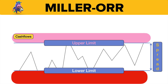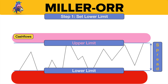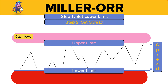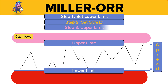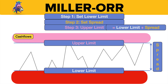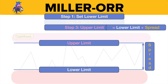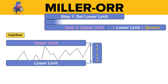So that is the spread. First of all, you manually set the lower limit — that's up to the directors. Then step two is to actually calculate the spread. And then step three, you've already calculated the upper limit, because the upper limit must be the lower limit plus the spread. So the question is: how do we calculate the spread?